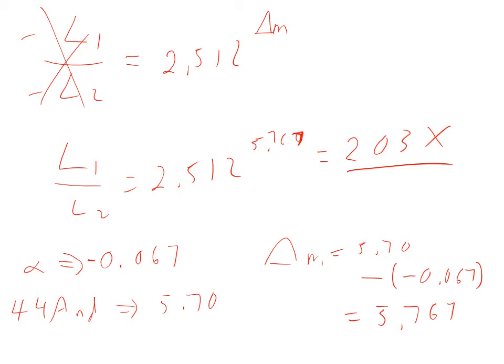How do I know I did 5.70 minus that negative number? Why not do it the other way? If I subtracted in the other order, the answer would have been negative. If the answer is negative, it's wrong — it has to be a positive number.